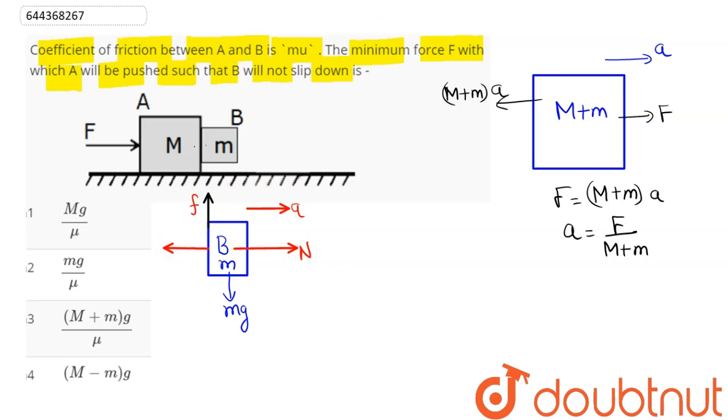Therefore we can say normal will come out as ma, and friction will be equal to mg, that is f = mg. So normal equals μN, which is equal to mg. Now normal can be written as ma equals mg, m and m cancel out.